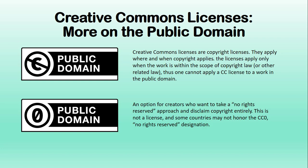A little bit more on the public domain: Creative Commons licenses are copyright licenses, as we said before — they apply where and when copyright applies. Thus, one cannot apply a CC license to a work in the public domain. There are options, though, for putting a work into the public domain depending on the country or jurisdiction you reside in. This no rights reserved approach allows one to disclaim copyright entirely. This is not a license — it is a tool known as CC0 that allows one to designate their work as a no rights reserved work. However, some countries do not honor the CC0 designation, so it is very important that you check to figure out if you are able to use this if you so choose.